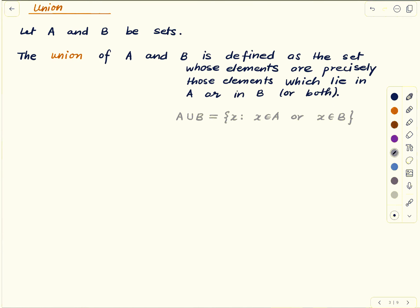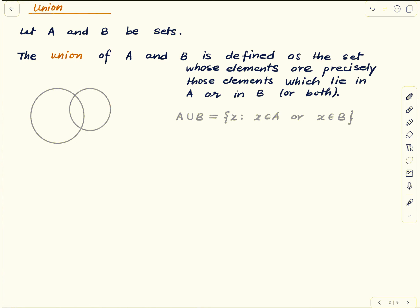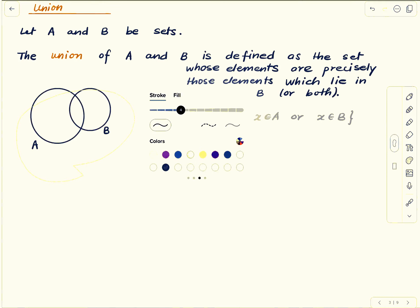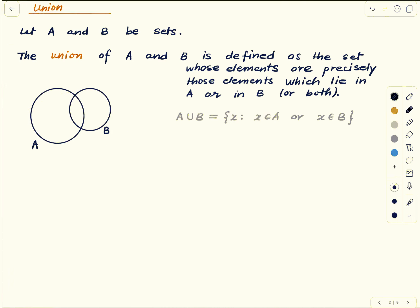Diagrammatically, we make a blob for A and a blob for B. The union A ∪ B is the entire shaded part — both blobs together. Note that A ∪ B is the same as B ∪ A, so union is commutative.